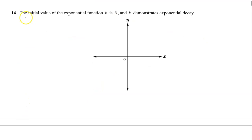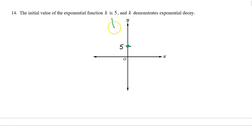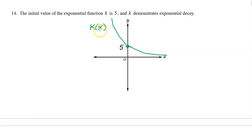Number fourteen starts off: the initial value of the exponential function k is five. The initial value is the y-intercept, so they're telling us that the y-intercept is going to be five. And k demonstrates exponential decay, which means k should be decreasing and approaching the x-axis, passing through this y-intercept. So there's your graph. Be sure to label it.